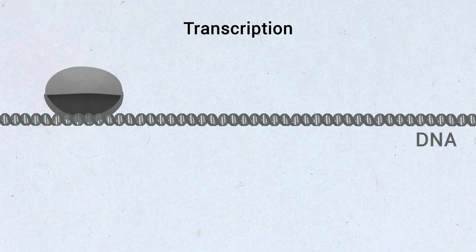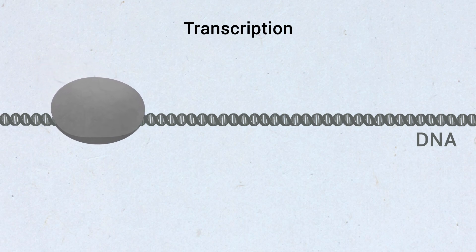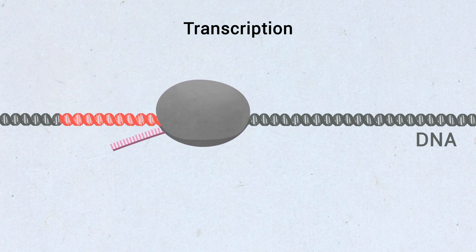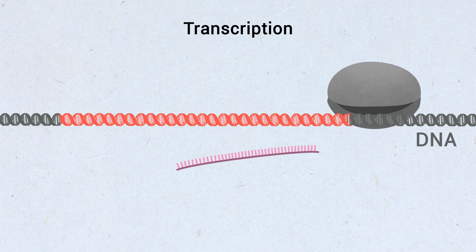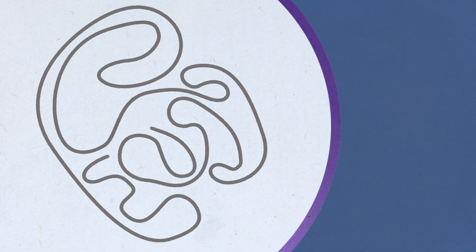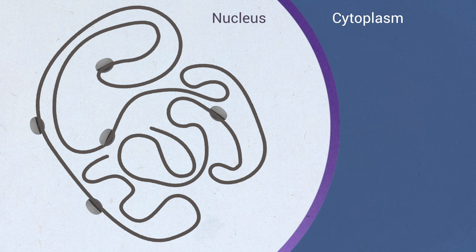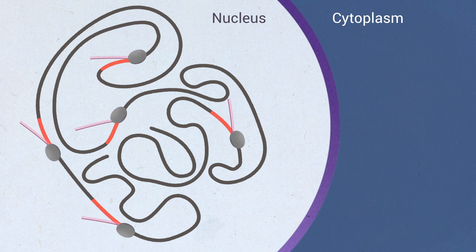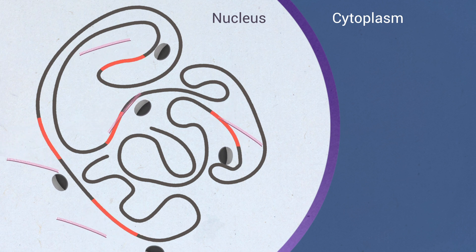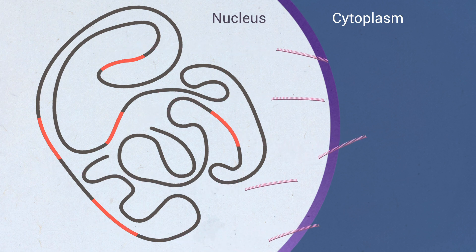Transcription is the first step of gene expression, in which a particular segment of DNA is copied into messenger RNA. This process is tightly regulated in all living organisms so that only a subset of genes are actively transcribed at any time in a given cell.